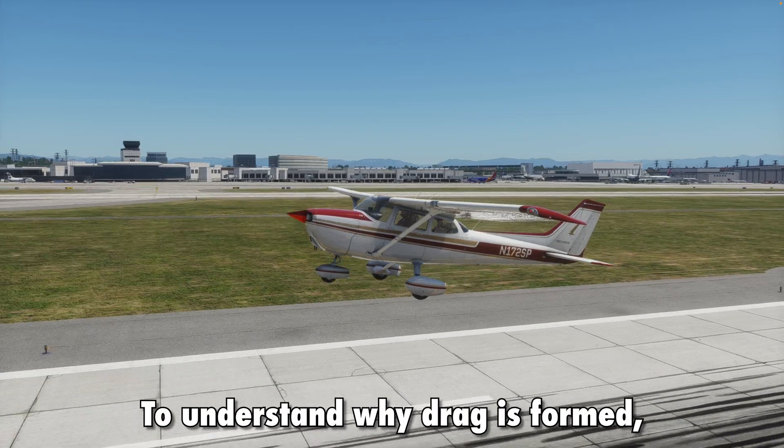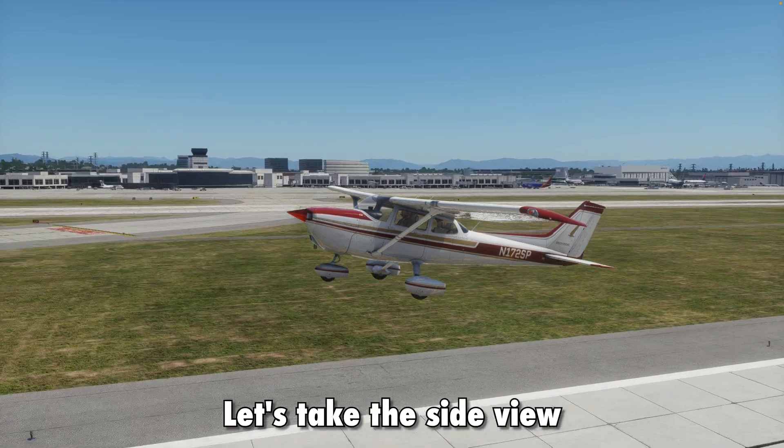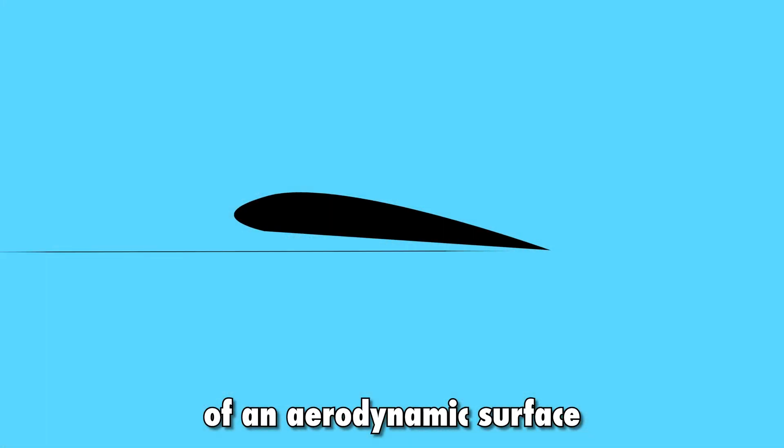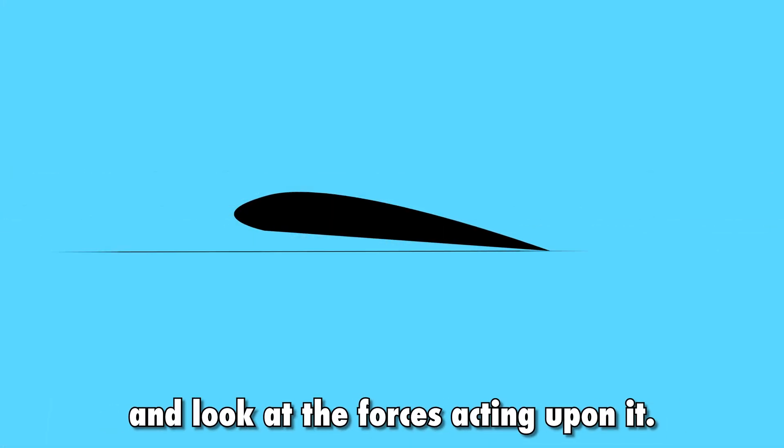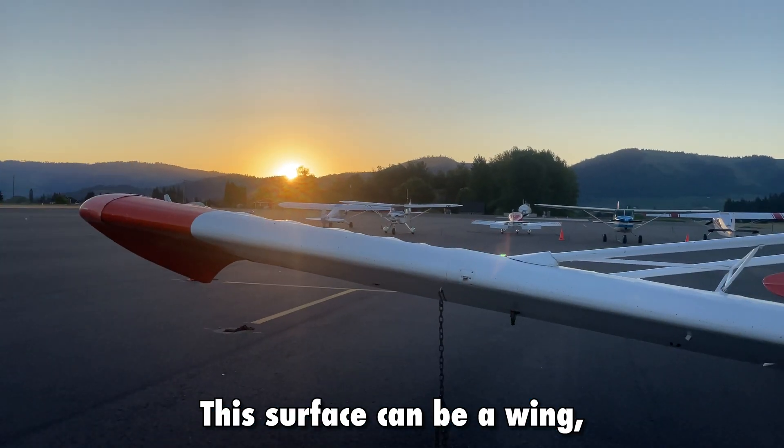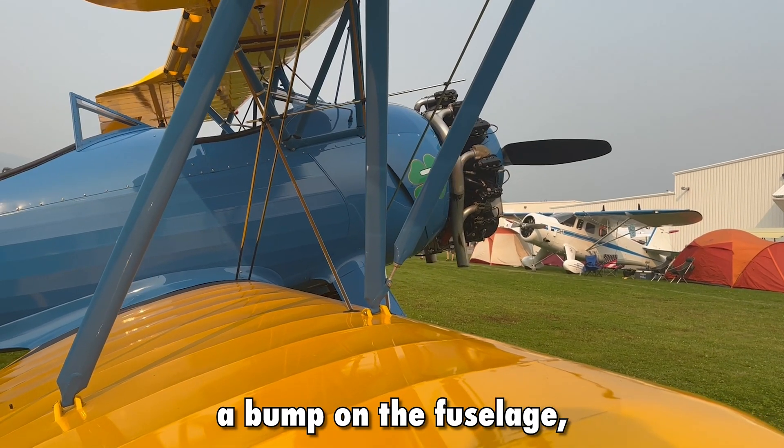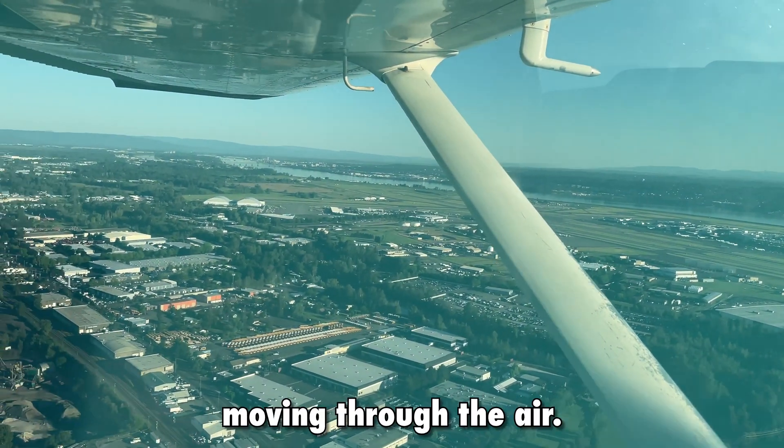To understand why drag is formed, let's take the side view of an aerodynamic surface and look at the forces acting upon it. This surface can be a wing, a bump on the fuselage, or any other surface moving through the air.